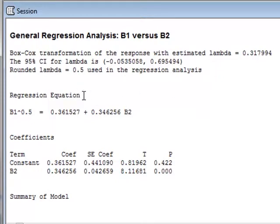This will give a regression equation of B1 to the power of 0.5, which is the same as the square root of B1, is equal to a constant 0.361 plus 0.346 times B2.